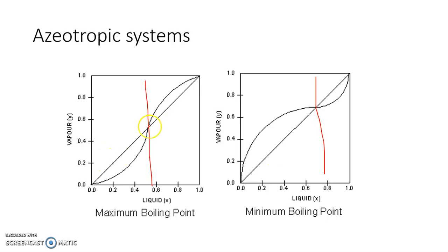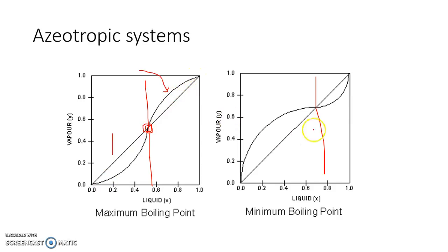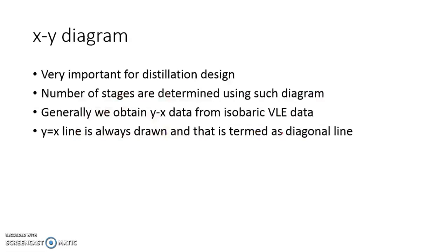This azeotropic point makes a distillation boundary — you can't proceed further with separation. If your feed is in one region, the azeotrope comes out as the top product and pure component 1 as the bottom. If you want to get pure component 1 on the other side, you have to have a separate feed. Whenever you have an azeotropic system, it's not possible to use a conventional distillation column to achieve 100% separation — either the top or bottom will have the azeotropic composition.